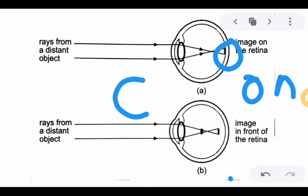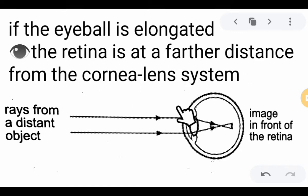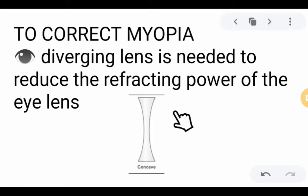That is why myopic persons can see nearby objects very clearly, but farther objects appear blurry. If the eyeball is elongated, the retina is at a farther distance from the cornea-lens system, which also results in the image of distant objects forming in front of the retina. To correct the nearsighted eye or myopia, the patient must use a concave lens or diverging lens.